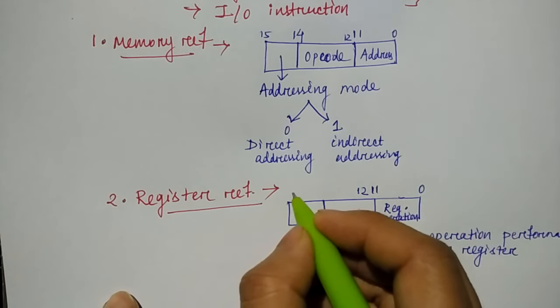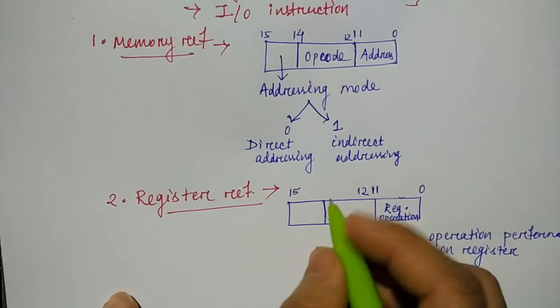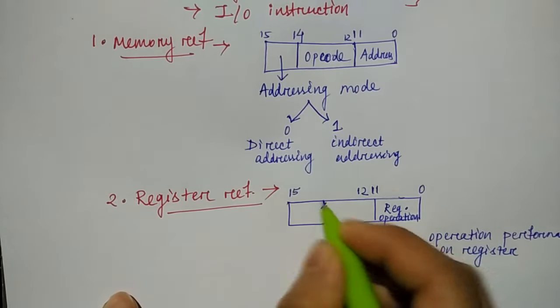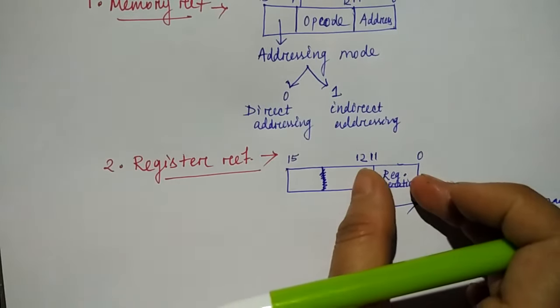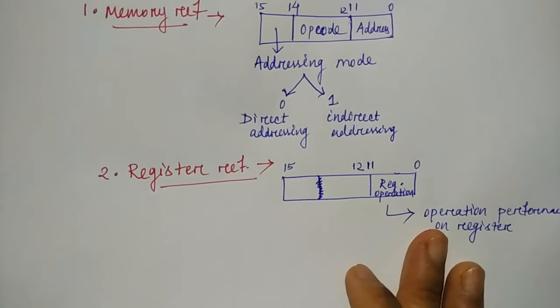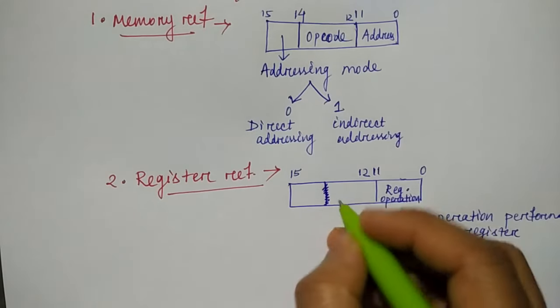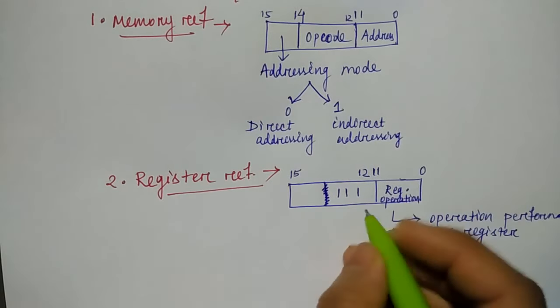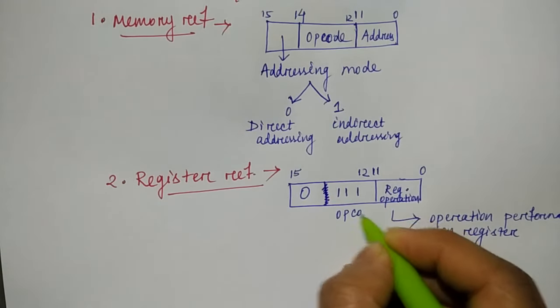The register operation is stored here for 12. Then your four bits from 12 to 15, this first part, we don't divide it this way. In register reference, we show which operation is done on each bit in the register.